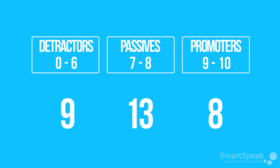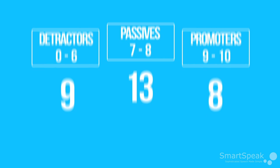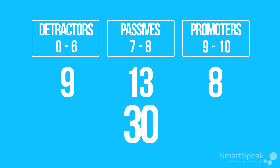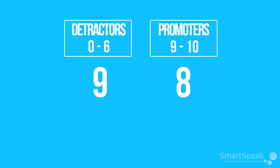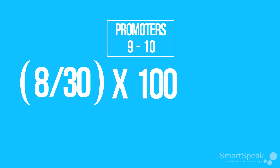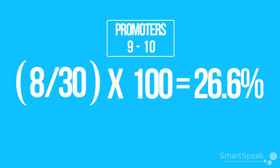Next we need to work out the percentages. If we add the number of detractors, passives, and promoters together, we get 9 plus 13 plus 8, which equals 30. To calculate NPS, we only need to worry about the detractors and promoters — we can discount the passives. Let's work out the percentage of both. Firstly, the promoters: 8 divided by 30 times 100 equals 26.6%.